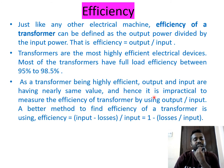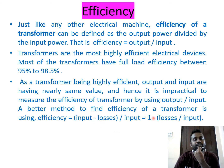Because output and input are nearly equal in a highly efficient transformer, it is impractical to measure efficiency by the direct output/input method. A better method is: efficiency η = (input − losses) / input = 1 − (losses / input), or equivalently, output / (output + losses).